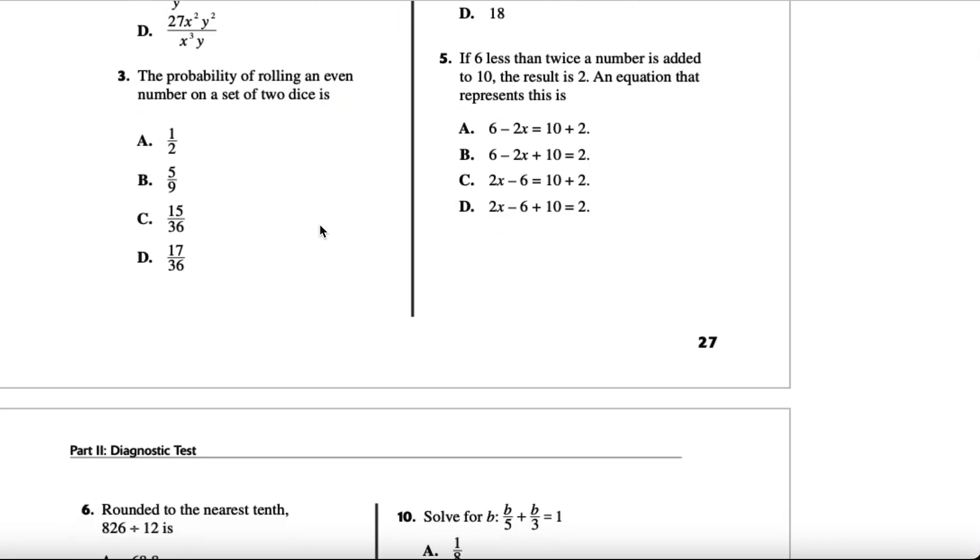Number 3: the probability of rolling an even number on a set of two dice. We know that on a die with six sides, if we want an even number we can get 2, 4, or 6. That basically makes up about half of the die. So for the two dice, we get half on any die that we use, and so this one should be A.